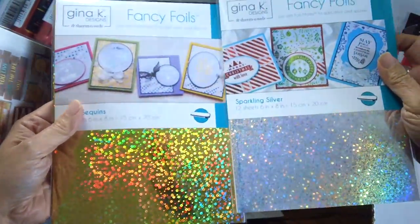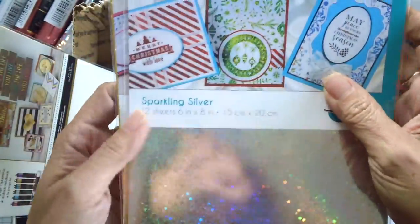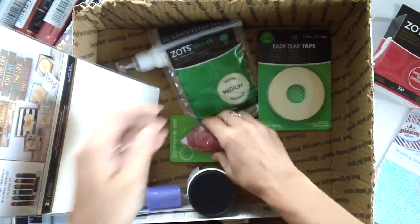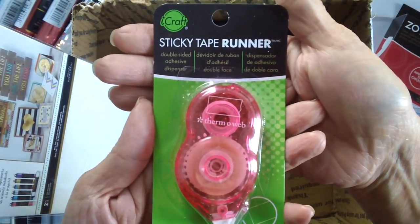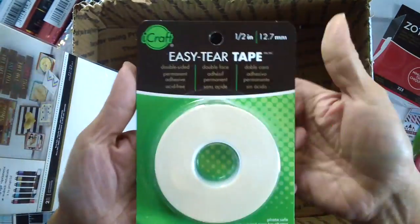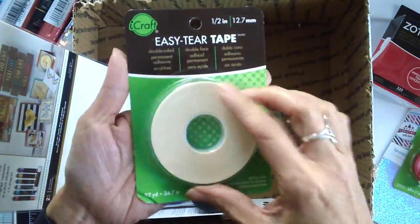Here is some minuscule glue dots and some Gina K fancy foils. I can't wait to use them for different projects and here is my favorite one. It's the sticky tape runner. It's pretty much invisible when you put it on your project.